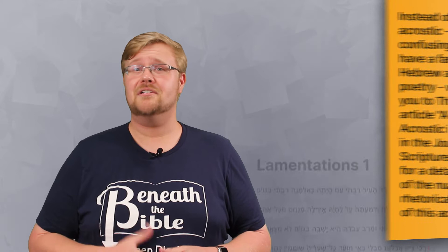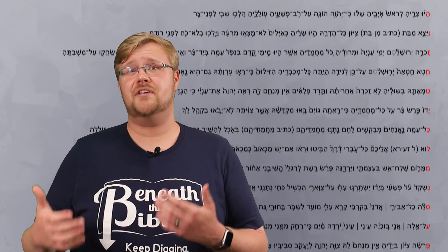Acrostics are used in a number of places in the Old Testament, such as Lamentations 1, Psalm 119, and elsewhere. They can be used to show literary skill or to help in memorization, but also to show a sense of completeness. This makes the half-acrostic in Nahum all the more vexing. It is possible that it's being used to show a sense of incompleteness or anticipation for what's foretold in the rest of the book.